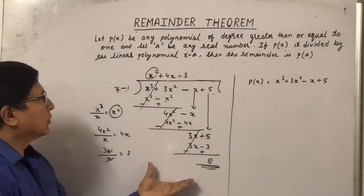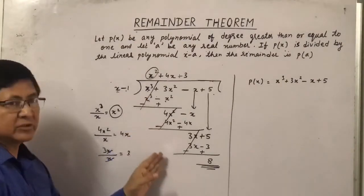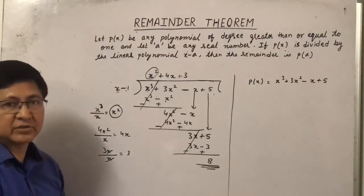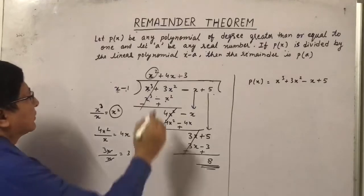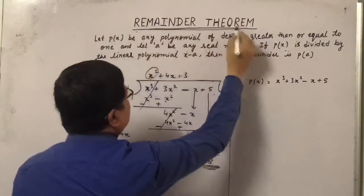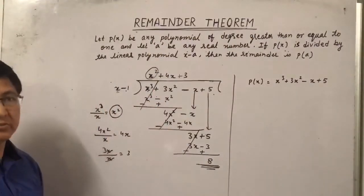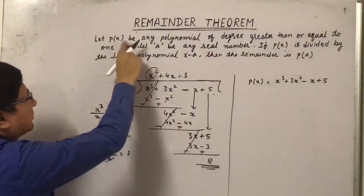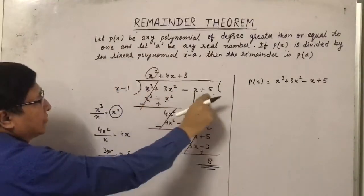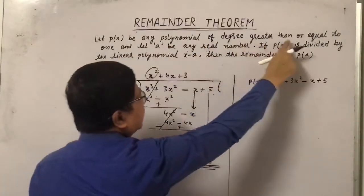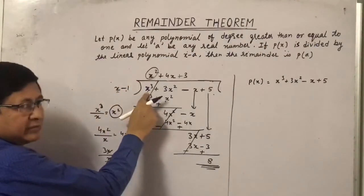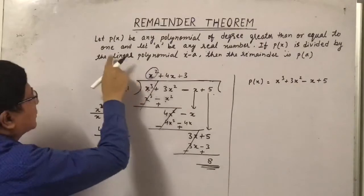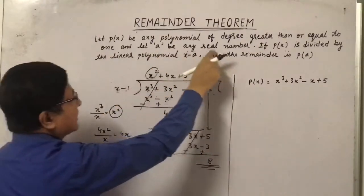Now we will find the remainder without the actual division. This is the actual division and we got the remainder 8. Now we will divide it by using a theorem that is known as Remainder Theorem. So let me explain what is the Remainder Theorem. Now let P(x) be any polynomial, this is a polynomial of degree greater than or equal to 1. The degree is 3 here. So greater than or equal to 1 and let A be any real number.